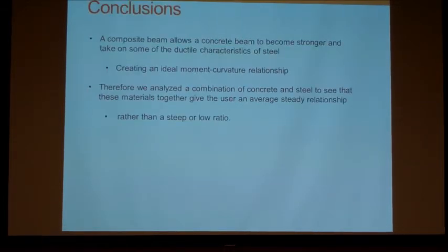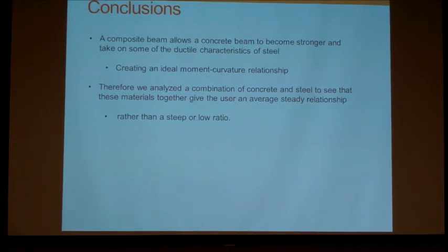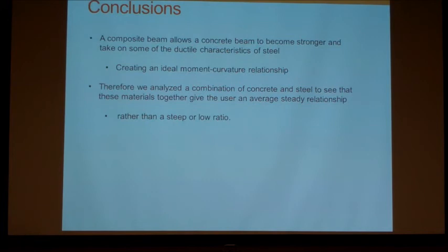And, conclusion. So, the reason we do this is a composite beam. By having a composite beam, it allows a concrete beam to deflect more and have more strength than it were to just be if it was concrete. Adding that steel in creates an ideal moment curvature relationship, instead of it just immediately breaking off right after the plastic moment. It just continues to deflect instead of just breaking. Another thing is by analyzing a combination of the concrete and steel, you can see that this gives a steady relationship rather than a really steep ratio or a really just low-flat ratio. So, then it can be more predictable and we can know how the beam would behave. And, that's it.